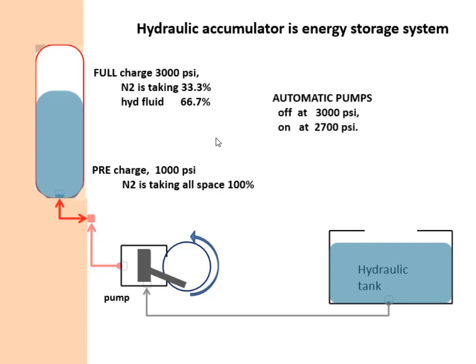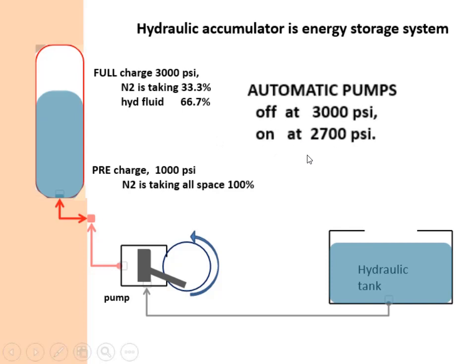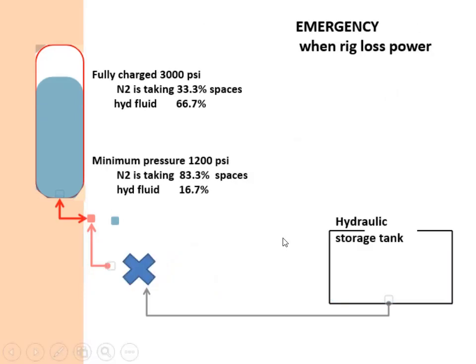the nitrogen is compressed on top and the pressure is increased to 3000 PSI. The pump runs automatically, it starts at 2700 PSI and stops at 3000 PSI. This pressurized fluid is useful mainly when the rig lost power,